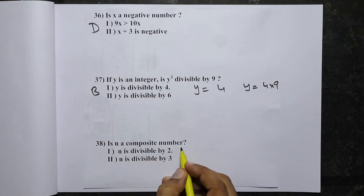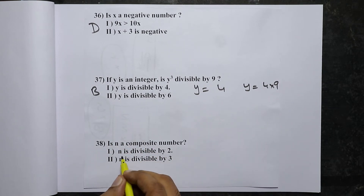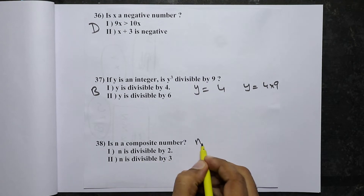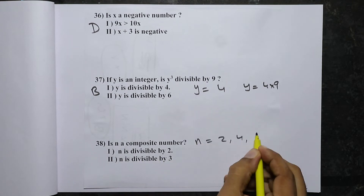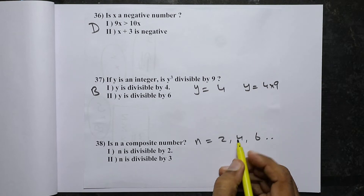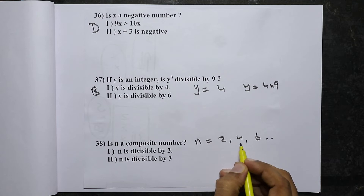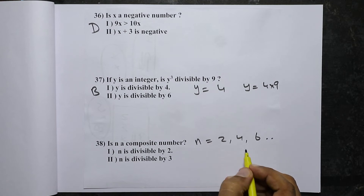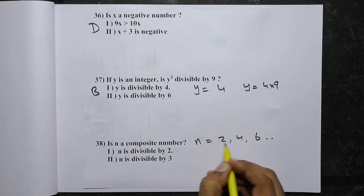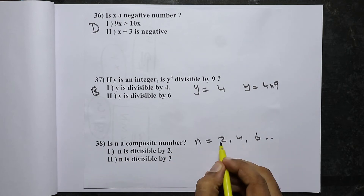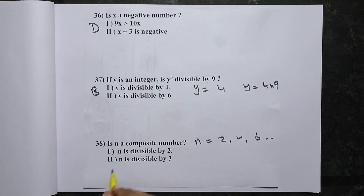Is n a composite number? The first statement says n is divisible by 2, so possible values of n are 2, 4, 6, and so on. Here n = 2 is prime, not composite, while n = 4 is composite. So n may or may not be a composite number. First statement alone will not do.